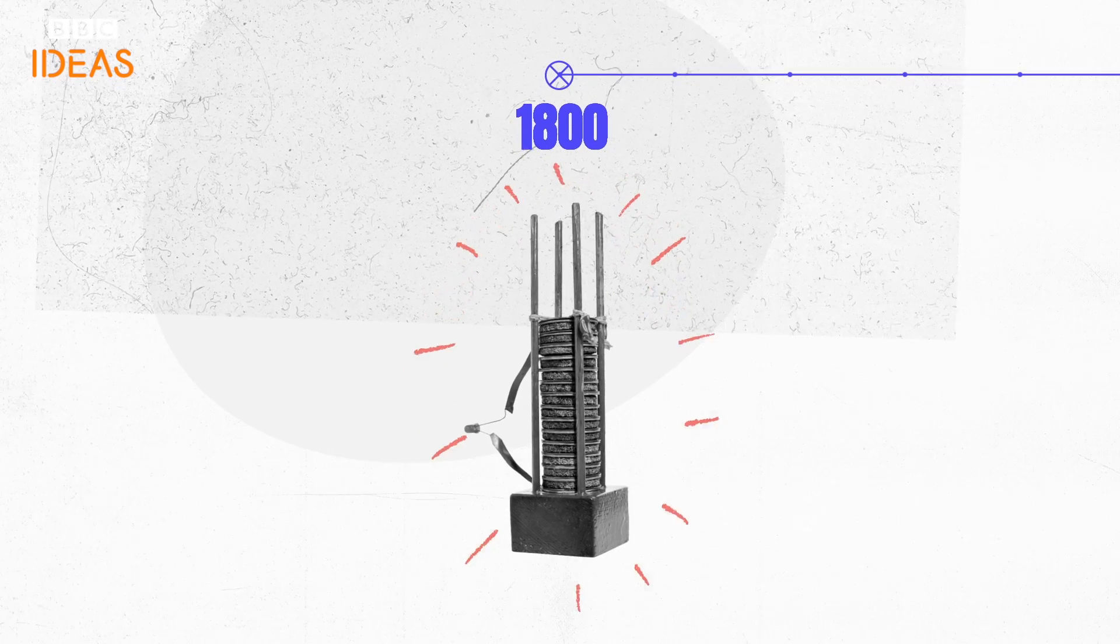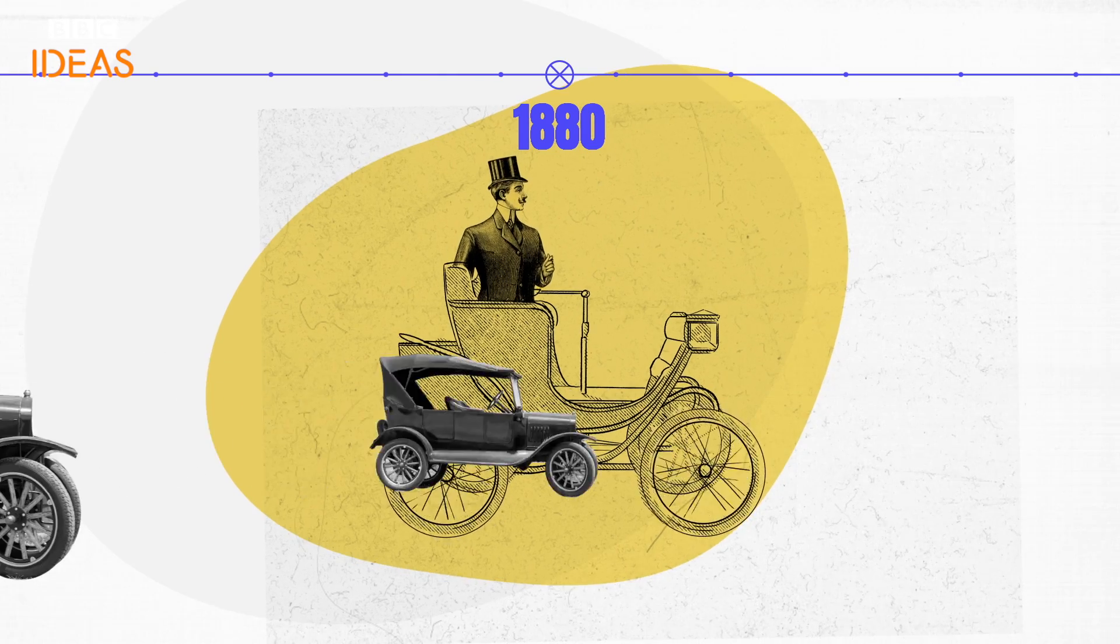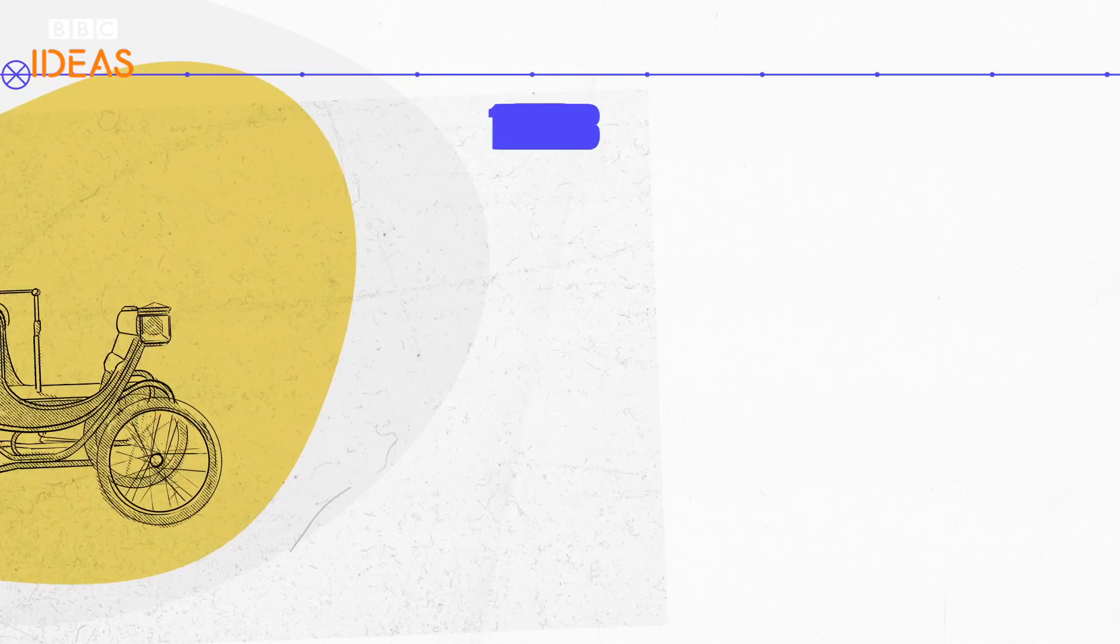Batteries as we know them were invented in 1800. The first electric cars were actually developed in the 1880s but fell by the wayside as the internal combustion engine took over.